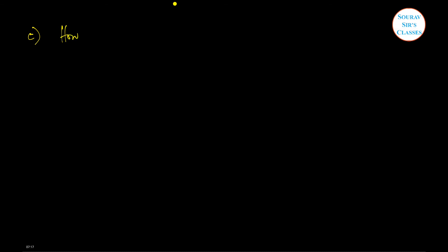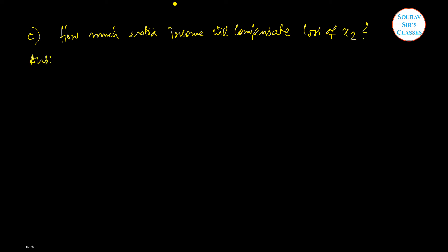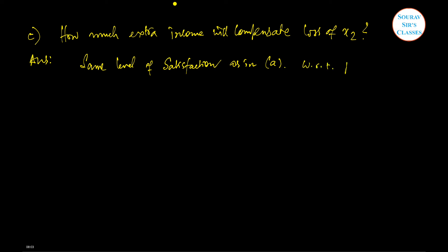Question part C asks: how much extra income must the agent be given to compensate for the increase in the price of x2? To find the extra income, we need to find the bundle at which the individual attains the same level of satisfaction as in part A, but at the prices of part B.